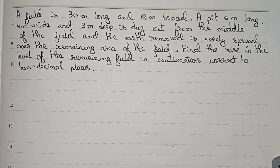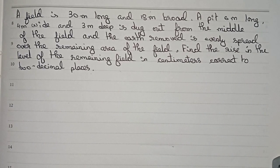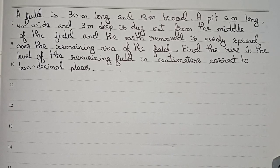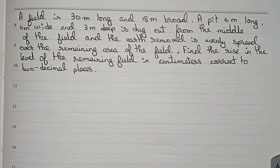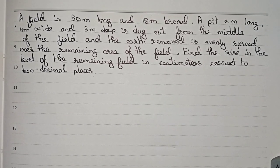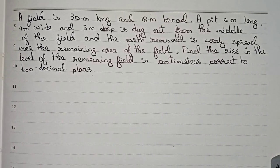Hello guys, welcome to this video. The question is: a field is 30 meters long and 18 meters broad. A pit is 6 meters long, 4 meters wide, and 3 meters deep, and is dug out from the middle of the field. The earth removed is evenly spread over the remaining area of the field. Find the rise in level of the remaining field in centimeters, correct to two decimal places.